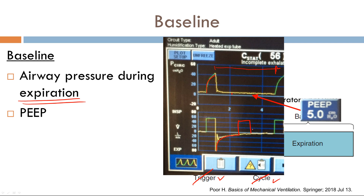And over time, this volume will get compounded, and you will get auto-PEEP and dynamic hyperinflation. As a result, the pressures inside the lung will increase. So take note of the exhalation phase when assessing the mechanics of the ventilator. If you're concerned about auto-PEEP, you can do an expiratory hold to see what the intrinsic PEEP is. That's it for the baseline variable.